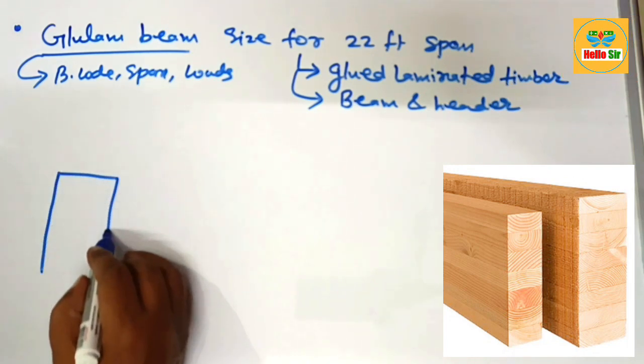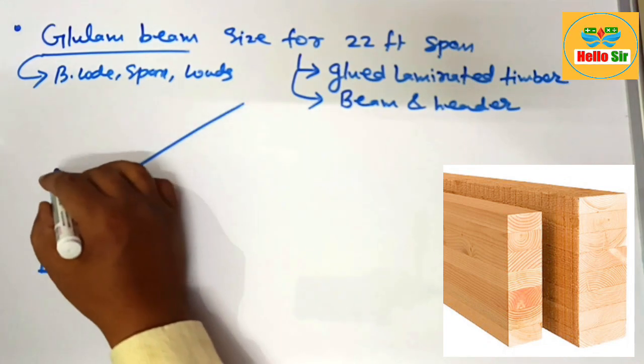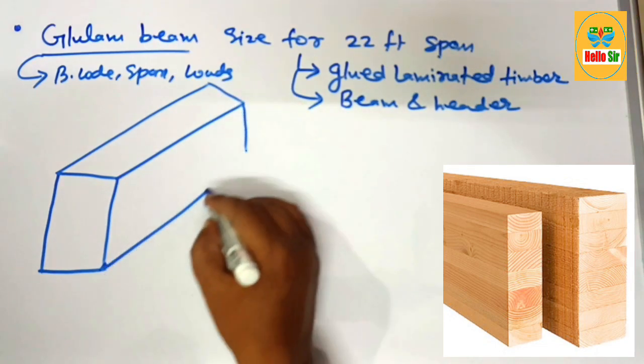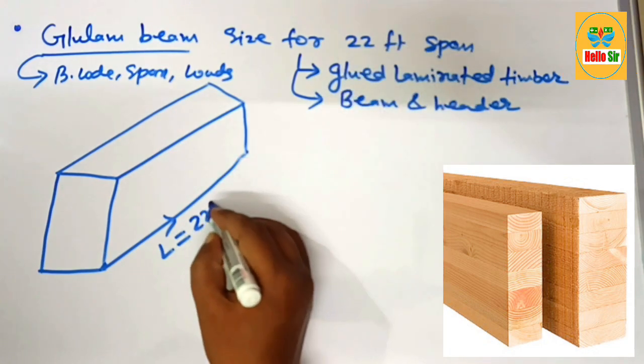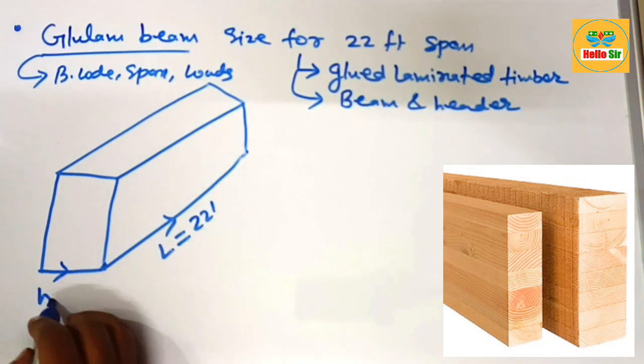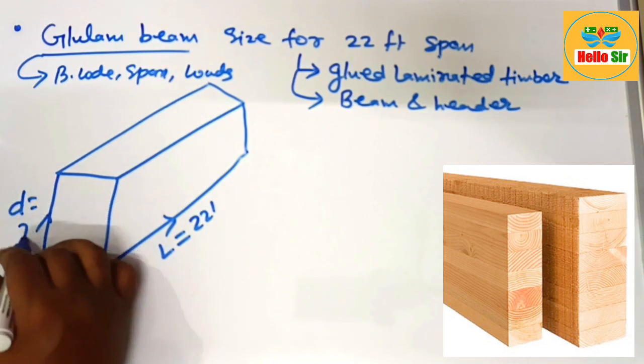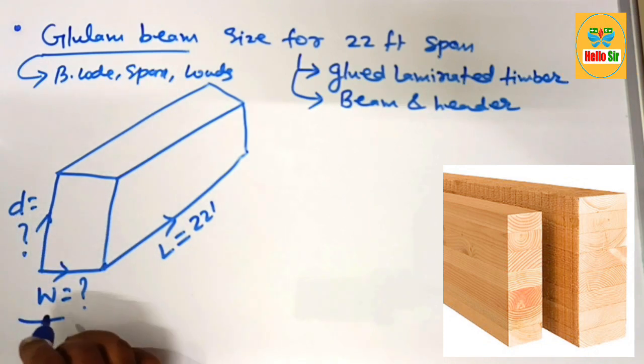Here we make rough diagram to understand about the different dimensions for the glulam beam. This one is rough diagram, this is length section which is 22 foot. This one is width section of the beam and this one is depth section of beam. You have to calculate this depth and width section of the beam.